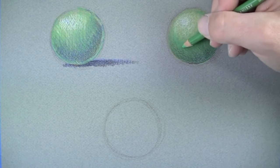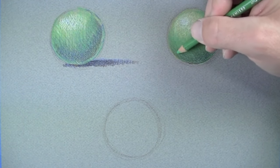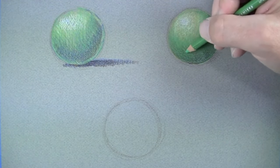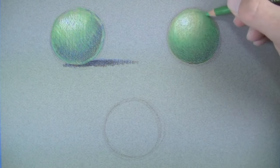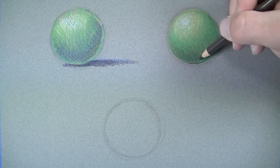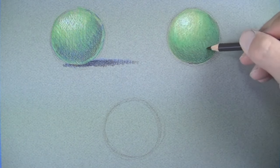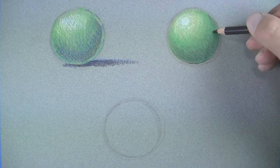After I've established the shadows and highlights, I'll revisit the sphere by layering over the top with a local color. I can make the shadows darker by layering brown on top of the green.